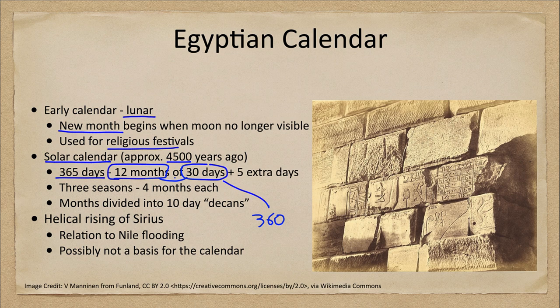Rather than distributing extra days into the months as we do now, they simply had five extra days as a festival at the end of the year. After the 12th month, there would be a five-day festival, and then the new year would start again with the first month, giving the full 365-day calendar.